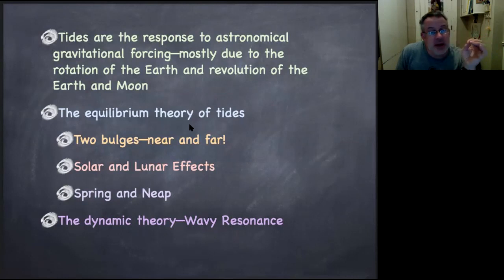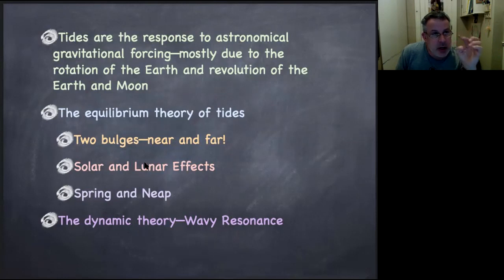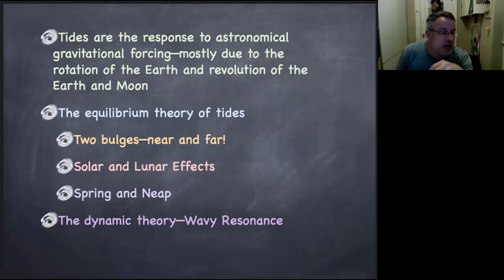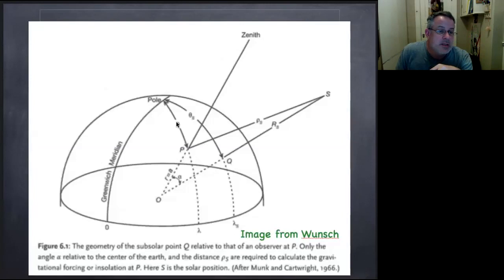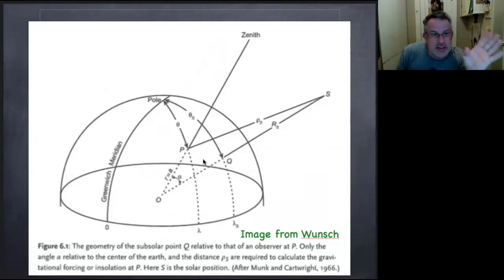Key ideas in the equilibrium theory of tides are that there are two bulges — one near and one far. There are solar and lunar effects, and then spring and neap tides, which is when the solar and lunar effects are either in constructive (spring cycle) or destructive interference (neap cycle). You can get quite fancy about this, talking about the zenith angle and meridians — there's a whole lot of geometry in tides.